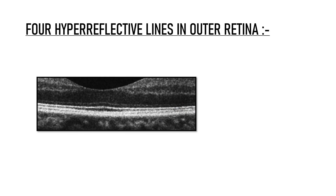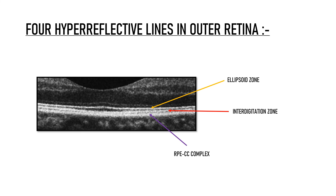Thus, four distinct hyper-reflective lines can be seen in the outer retinal layers of an OCT scan. From outside to inside, these are: RPE or retinal pigment epithelium, then the IZ or interdigitation zone, then the ellipsoid zone (EZ, or IS-OS junction), and the fourth line is the external limiting membrane.